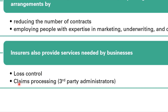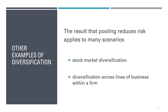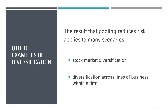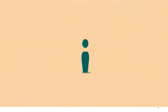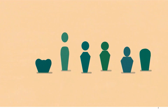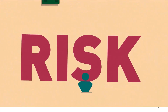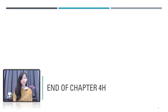The risk-reducing results of pooling apply to many scenarios beyond insurance — for example, stock market diversification through mutual funds (also called unit trusts), and diversification across different lines of business within a firm. In short, the more people a pool covers, the more people there are to share the risk, and the cheaper coverage becomes for everyone. Remove participants and things get riskier and more expensive. That's the end of Chapter 4 on pooling arrangement and diversification of risk. Thank you for watching and see you next time.